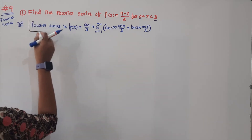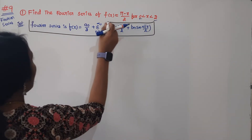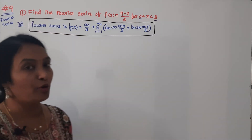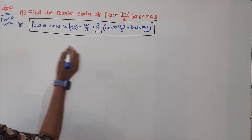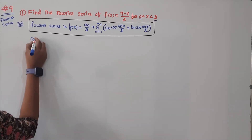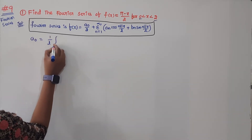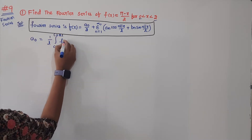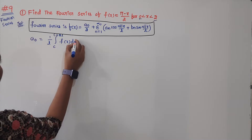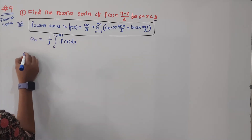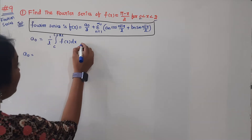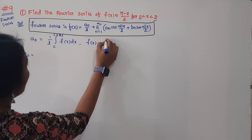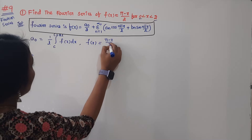The Fourier series has coefficients a0, an, and bn. We need to find and substitute them to get the answer. The given function f(x) is equal to (π - x) / 2.